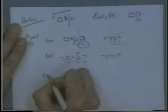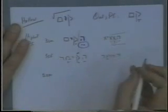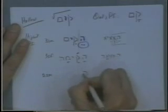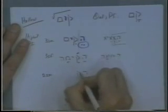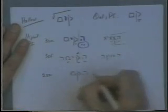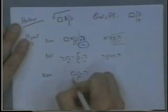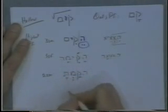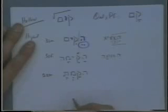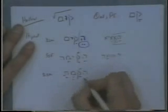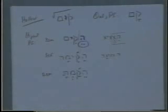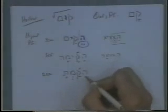What about the second singular masculine now? What happens here? Here's where you lose the infix, and it just becomes qom, and now you're ending ta, ti, ti, or ta, ta, ti, tem, ten, nu. The rest of them are the same, okay? The accent stays there, so that first syllable is still open, and it's left as a sere.